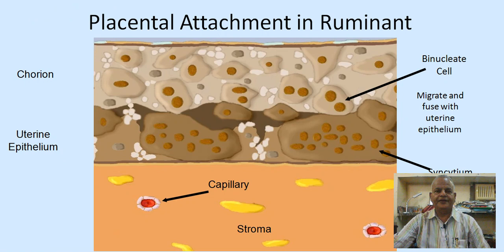The placental attachment in the ruminant is considered to be synepitheliochorial. This is the chorion, the uterine epithelium, capillaries, stroma, and these are the binucleate cells which migrate and fuse with the uterine epithelium forming a syncytium. So the ruminant placenta is also considered synepitheliochorial.